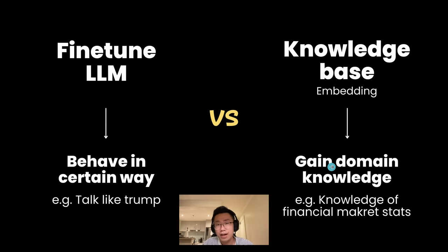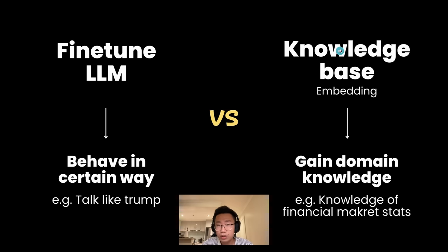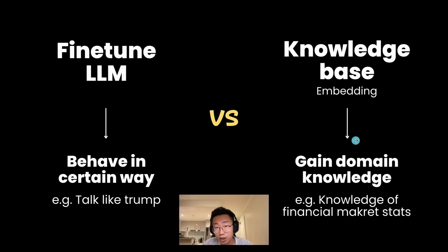But if your use case is that you have a bunch of domain knowledge, like legal cases or financial market stats, fine-tuning is actually not going to work because it's not good at providing very accurate data. Instead, you should use embedding to create a knowledge base, so that when someone asks which stock has the highest price movement, it will retrieve real data and feed it as part of the prompt. So those two methods serve two different use cases.